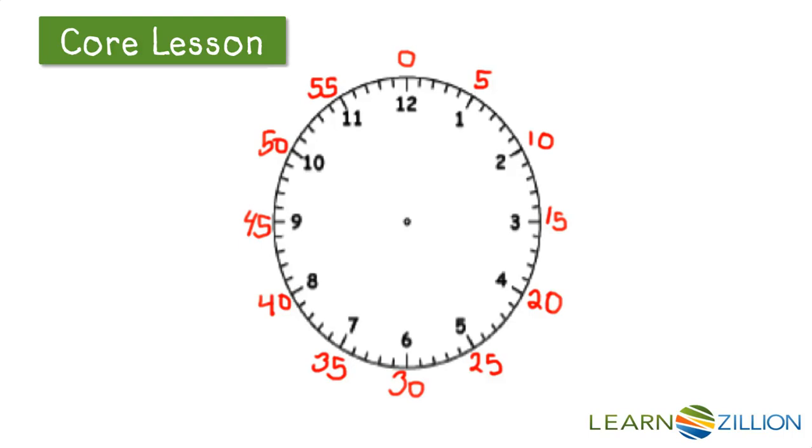When telling time to the exact minute, we can use a counting strategy. We start at zero and count by five minutes: five, ten, fifteen, twenty. This is a more efficient counting strategy than counting by single minutes like one, two, three, four.